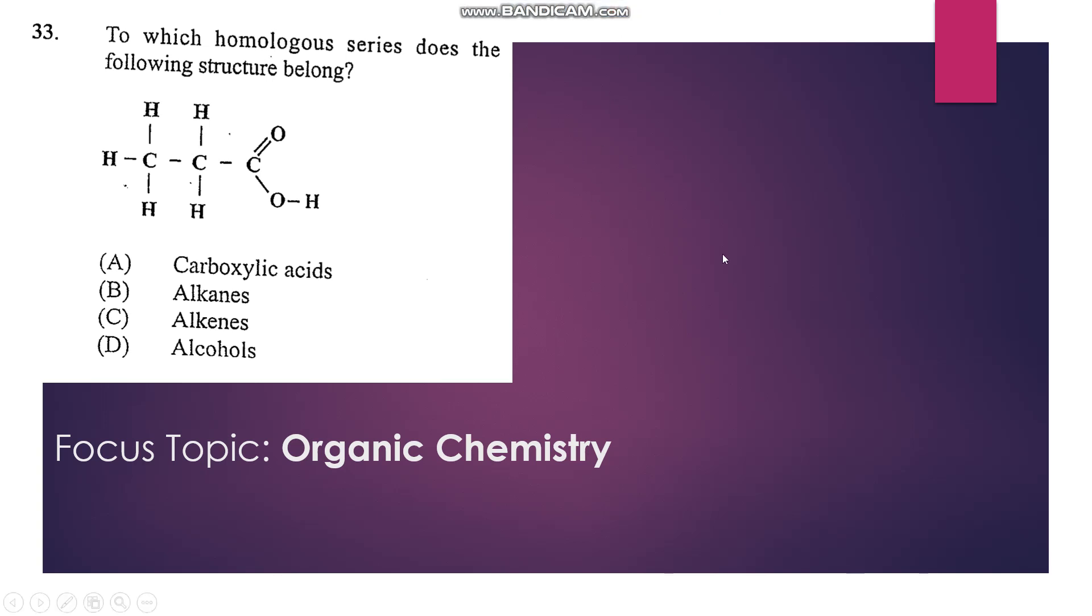Number 33: To which homologous series does the following structure belong? When you look at the structure, we see a C double bond O, O-H group. That functional group belongs to the carboxylic acids, so we know the answer is A.